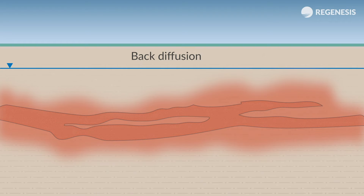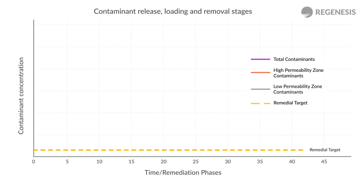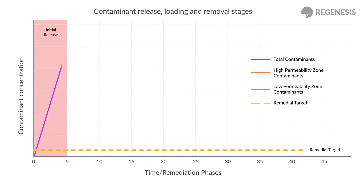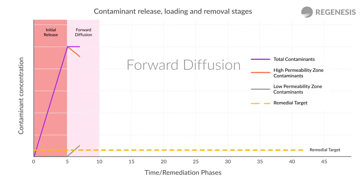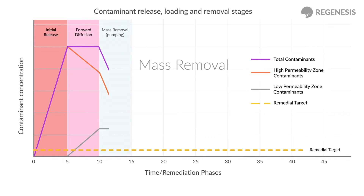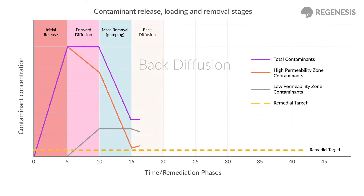During the initial release, all contamination is located in the high permeability zone. The concentration gradient then causes forward diffusion of the contamination into the immobile porosity. Pumping only removes mass from the high permeability zone, which is then recontaminated through back diffusion from the low permeability zone.